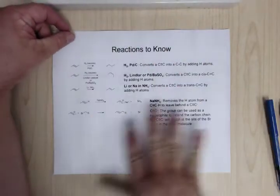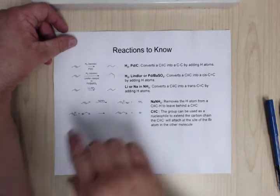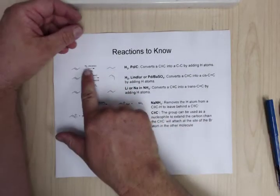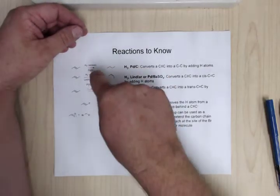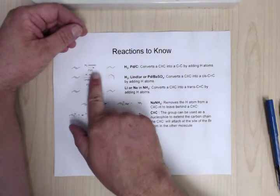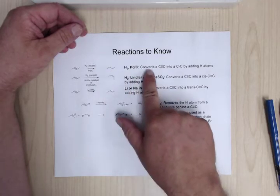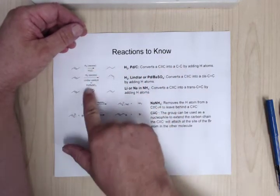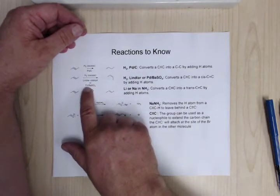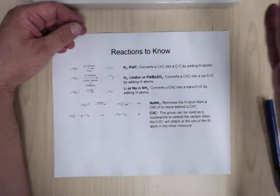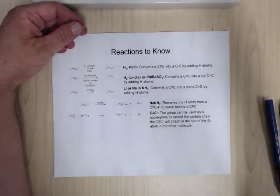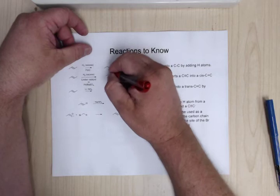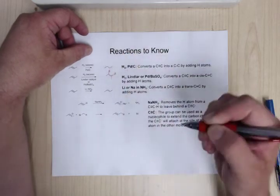These are reactions to know. For alkynes and alkenes, if you hydrogenate completely, you convert all the way down to a carbon-carbon single bond. If you instead use a Lindlar catalyst or palladium with barium sulfate, it's a syn addition where both hydrogens go on the same side, giving you the cis product.